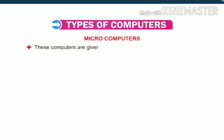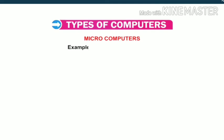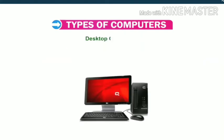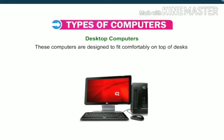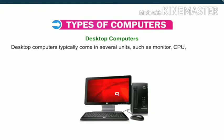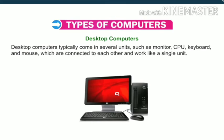Microcomputers are given different names according to their usage. Examples include Commodore 64 and IBM PC. Desktop computers are designed to fit comfortably on top of a desk. They typically come in several units — such as monitor, CPU, keyboard and mouse — which are connected to each other and work like a single unit.